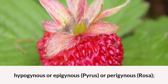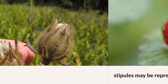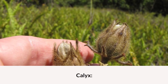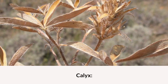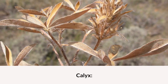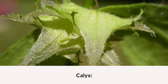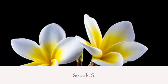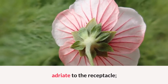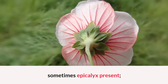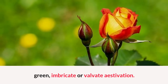Or perigynous (Rosa). Stipules may be represented by an epicalyx (Fragaria, Potentilla). Calyx: sepals five, gamosepalous, adnate to the receptacle; sometimes epicalyx present; calyx tube remains free or adnate to the ovary; green, imbricate or valvate aestivation.